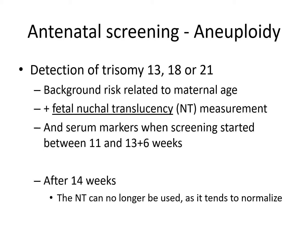The next application of the first trimester ultrasound is screening for aneuploidy — abnormal chromosome numbers such as trisomy 13, trisomy 18, and trisomy 21, where the fetus has 47 chromosomes instead of 46. The background risk of aneuploidy relates to maternal age: the older the woman, the more likely she is to have a trisomy. Nuchal translucency measurement, used at 11 to 13 weeks of gestation, is part of the detection strategy and can be combined with certain serum markers to form a first trimester combined screening test. After 14 weeks, nuchal translucency can no longer be used as it tends to normalize.